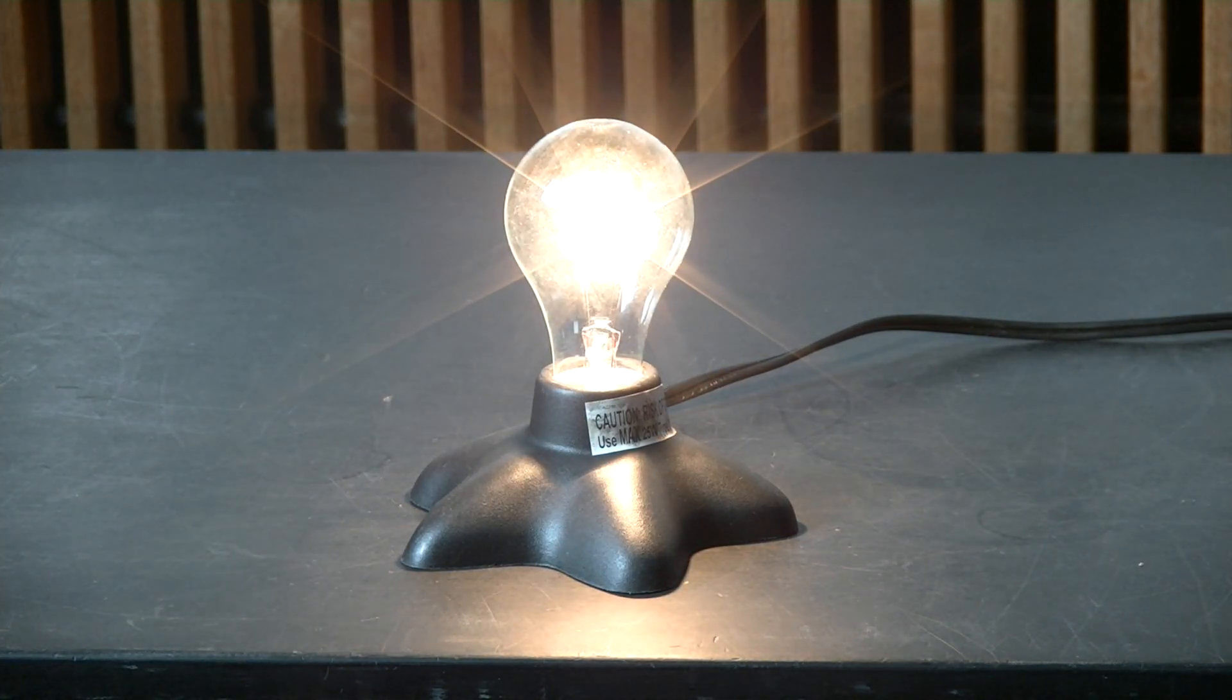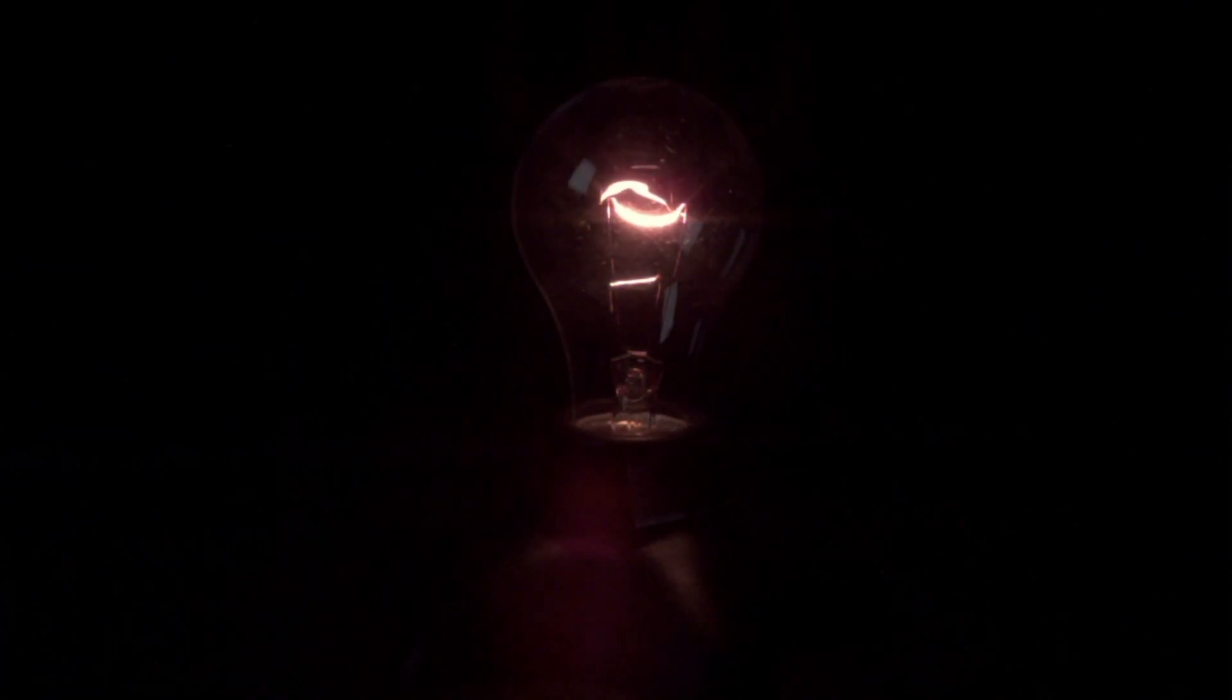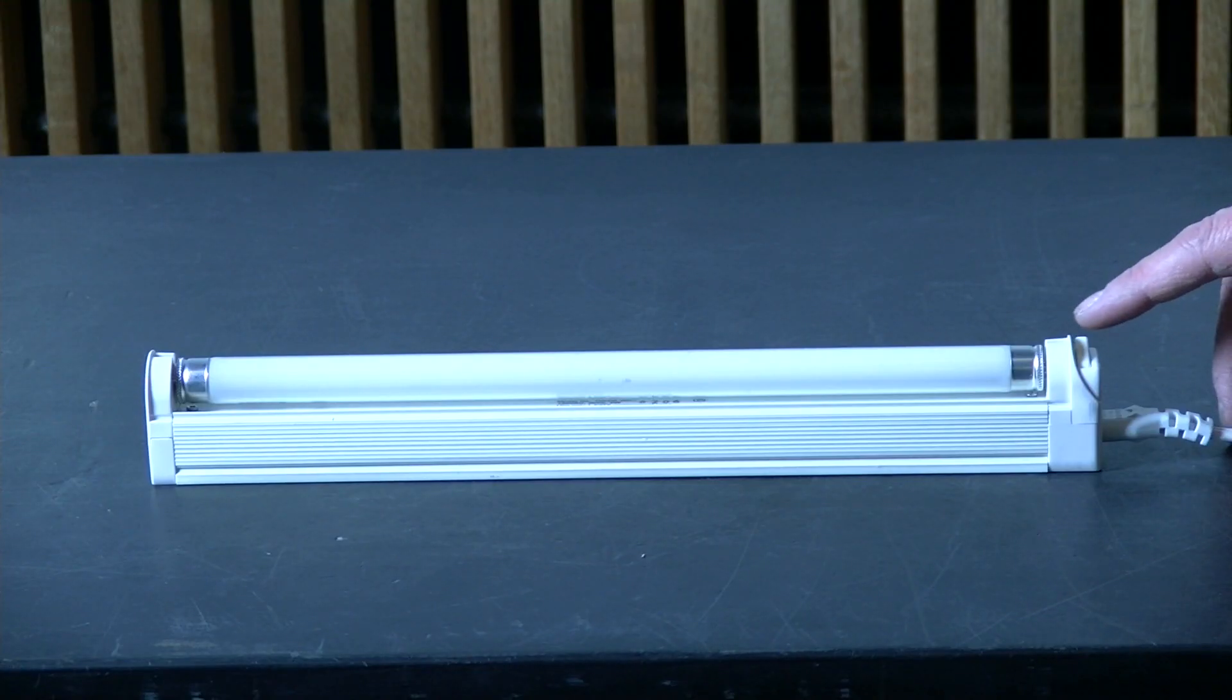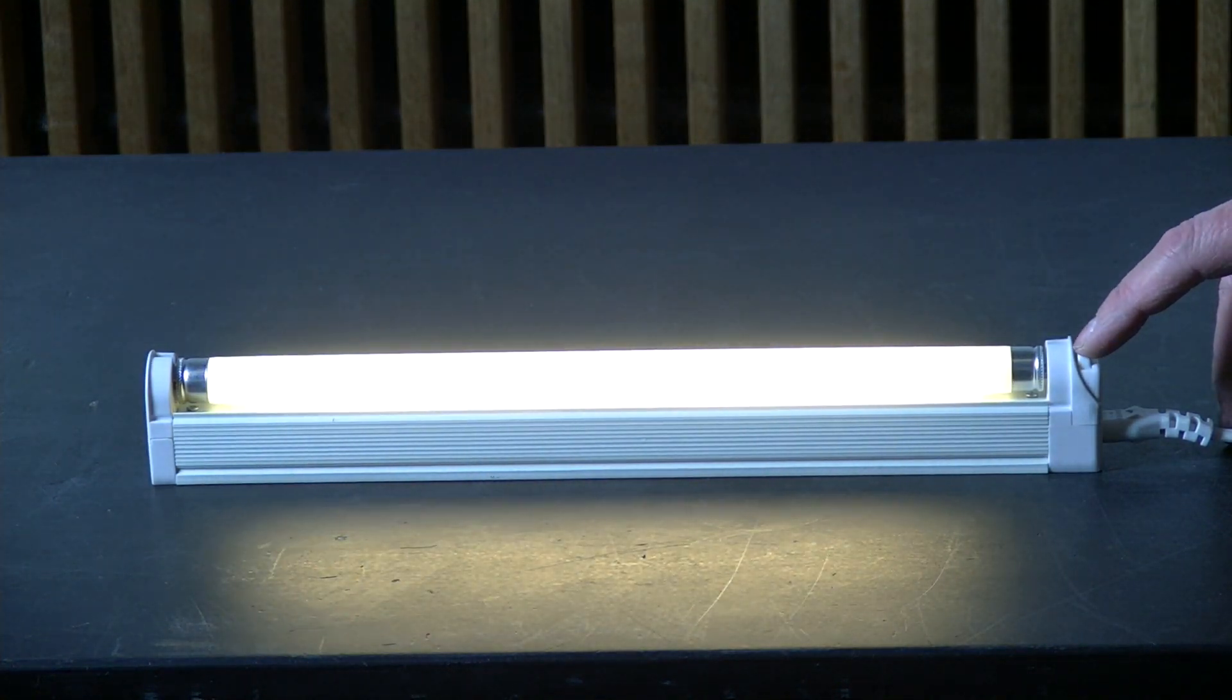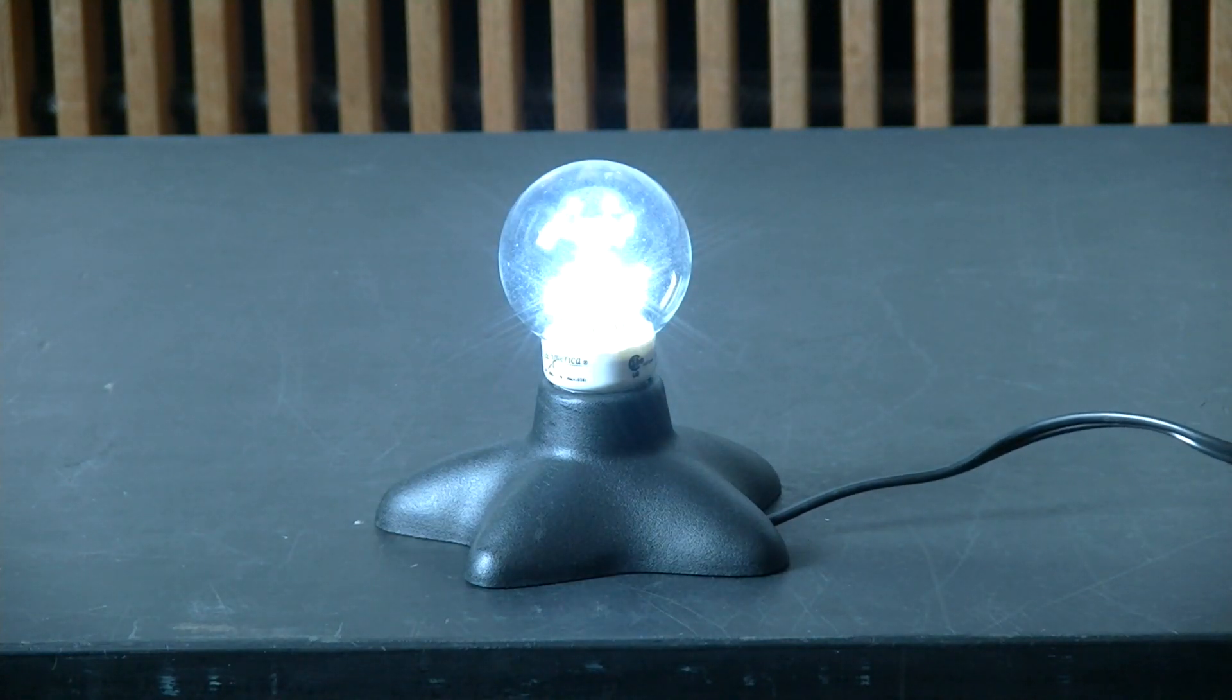Here's an incandescent light. Looks pretty good in normal video. But, in slow motion, sure flickers. Well, this is a fluorescent light. It looks good. Slow motion, look at it. Flickers a lot. How about an LED? Oh, it flickers a whole lot. It's that alternating current we use.